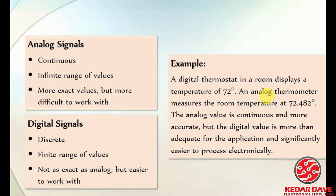For example, with a thermostat, the analog temperature measures the room temperature at 72.482 degrees — the analog value is continuous. It will change because it appears as continuous values, whereas in digital we understand it as discrete values. In order to get a clear idea about the exact value, the analog must be converted to digital.